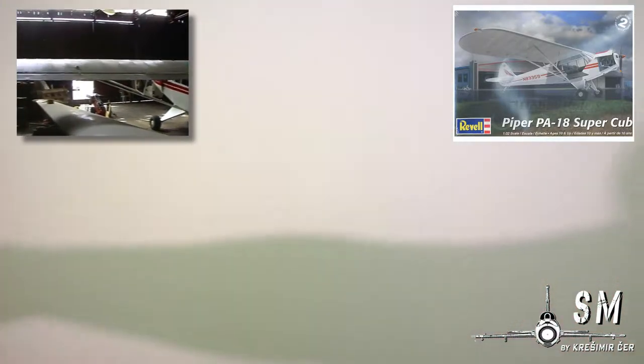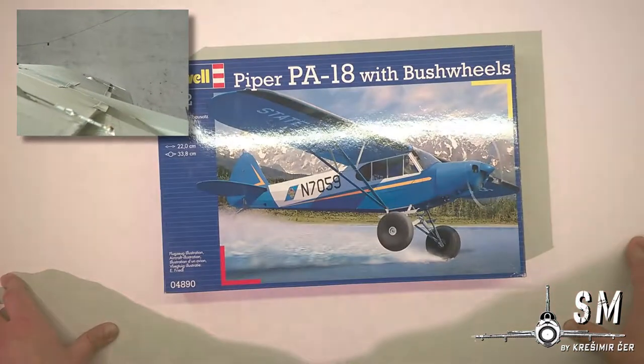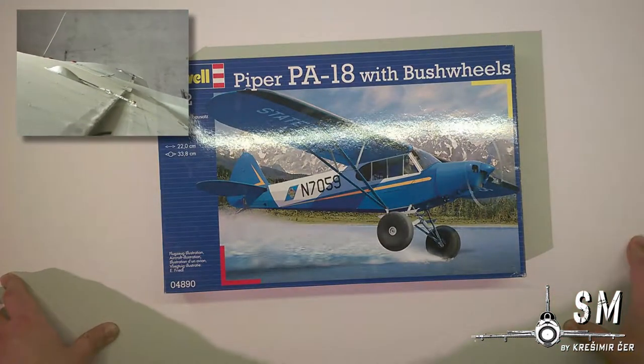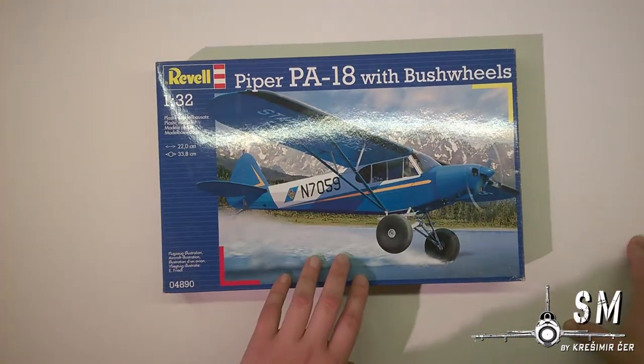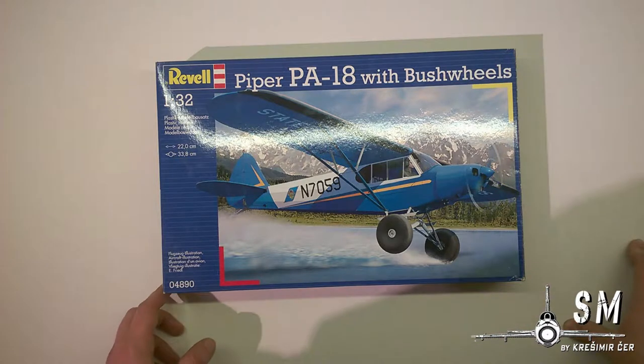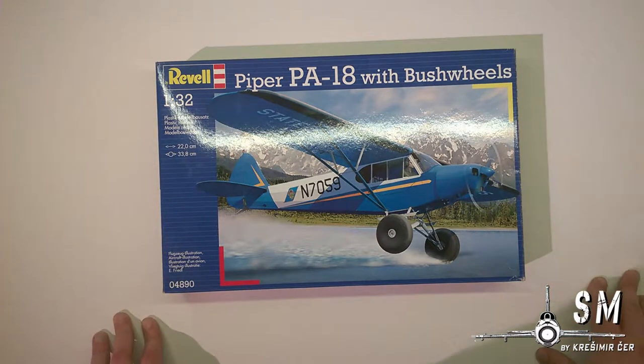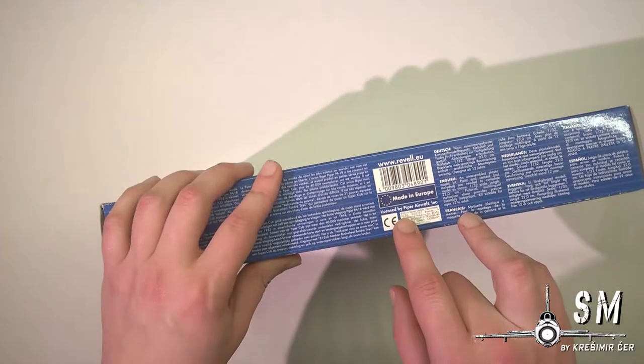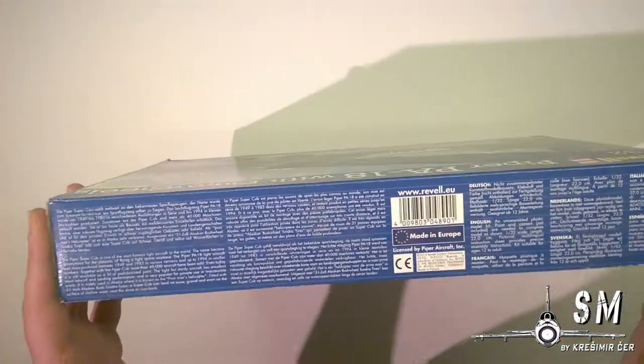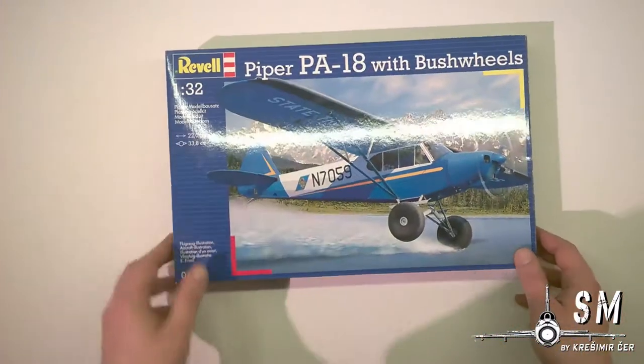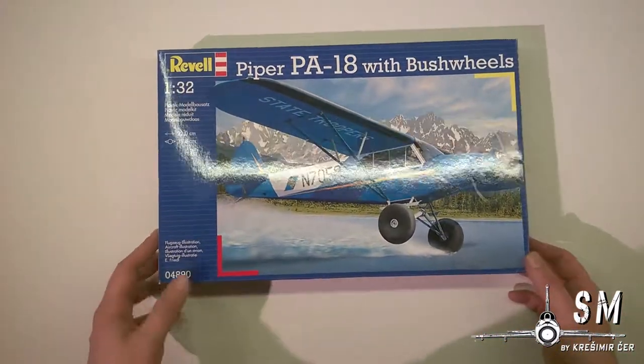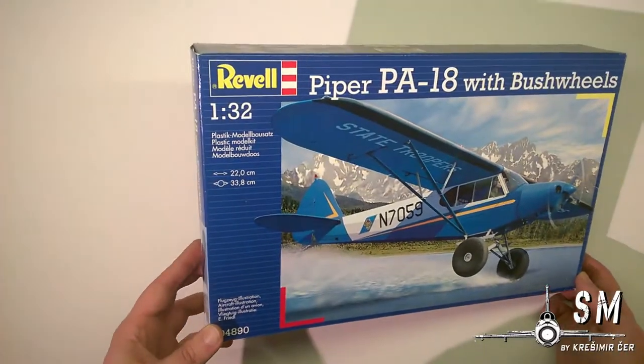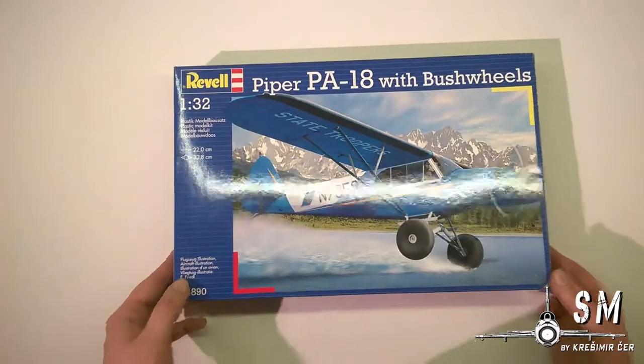Also this kit was first released in 2007 and it was reboxed many times. You have this one with bush wheels, you have also another one with floats, one in German markings I think, and it's actually reboxed many times. You can see here says 2014 but it's actually 2007 kit, which is actually irrelevant because it's a very nice kit and I think it is the only one in 1:32 scale that I know of.